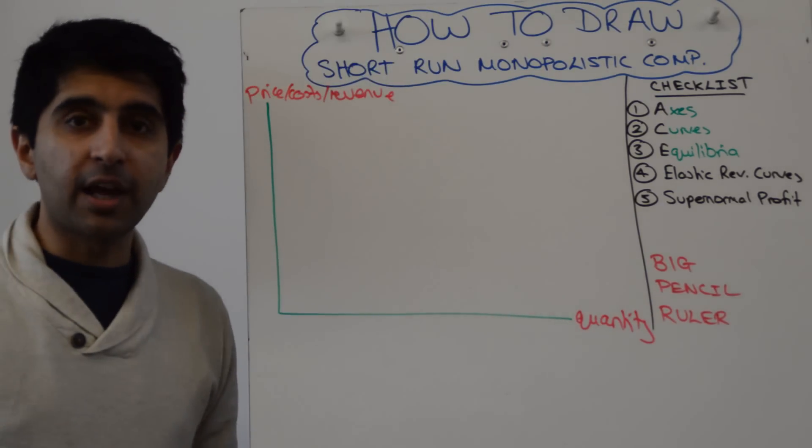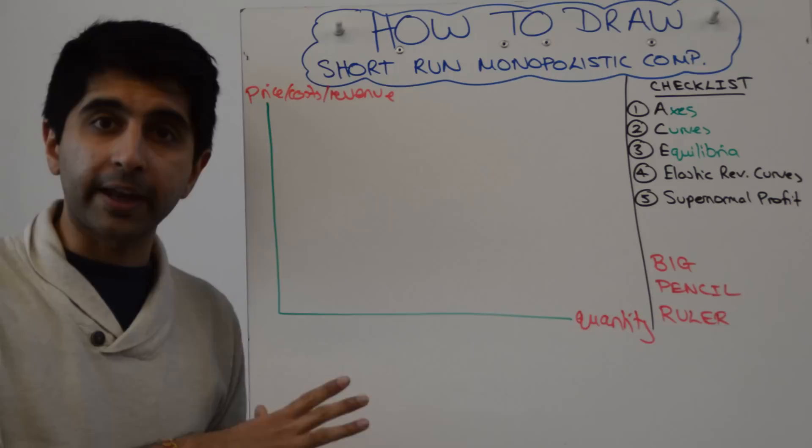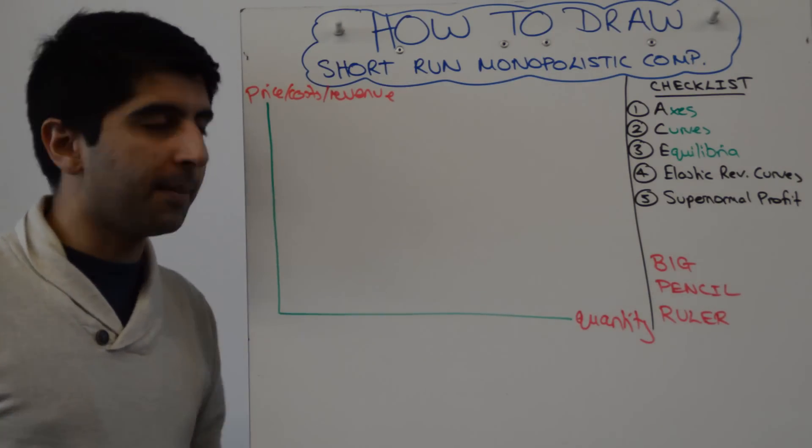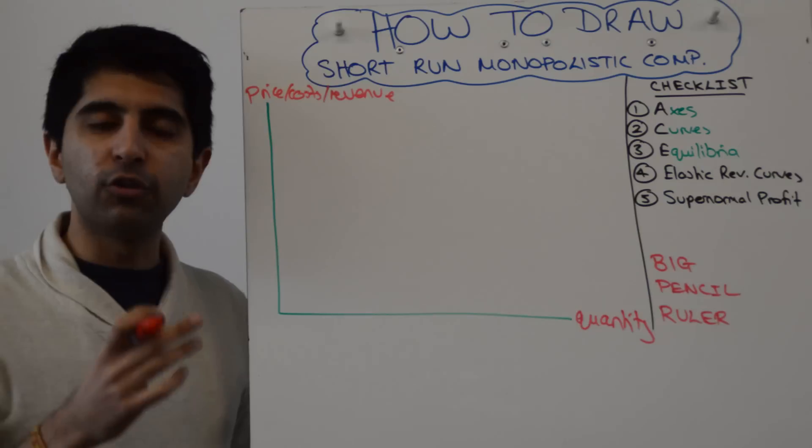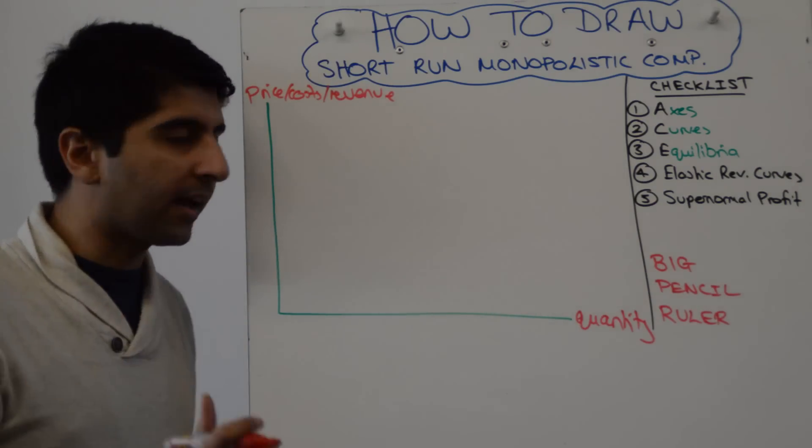Now it's the same procedure as your monopoly diagram. Go and watch that construction if you haven't already and it's basically following the same pattern. The only difference now is your revenue curves - draw them slightly shallower, right? More elastic.